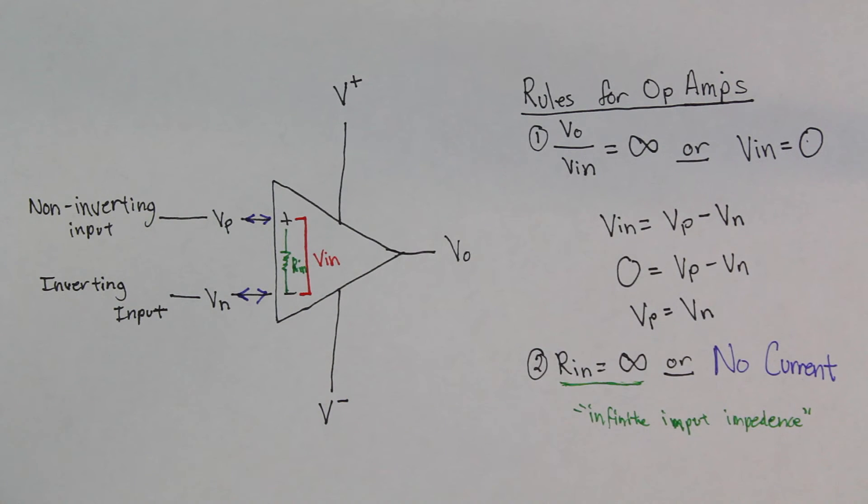Now, this second rule, the Rin is equal to infinity, or no current rule, is also called the infinite impedance rule. Now, what they mean by that is that these are rules for the ideal op-amp. These are the qualities that an ideal op-amp would have. They're not necessarily rules, but the op-amps that are manufactured today are trying to be as close to the ideal op-amp as possible. This way, they follow the formulas that we're about to prove in a little bit, just as closely as they can.